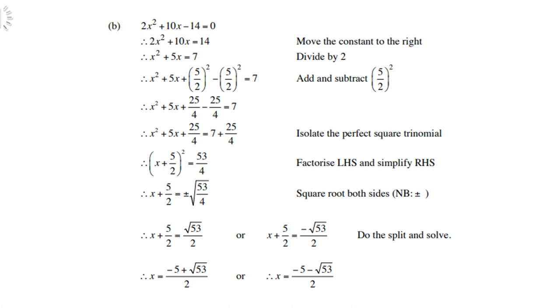You must add this to both sides, or you can first subtract it from the left-hand side—either way, it doesn't matter. Then factorize the three terms on the left-hand side, which gives you x plus 5 over 2 all squared, and 7 plus 25 over 4 gives you 53 over 4.